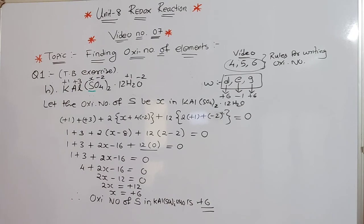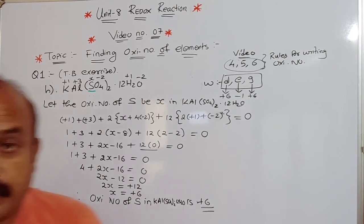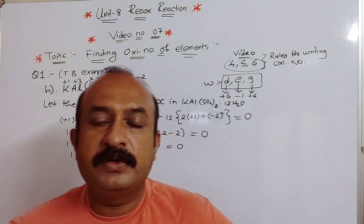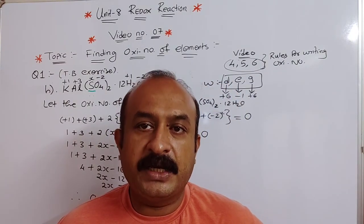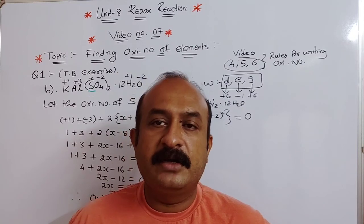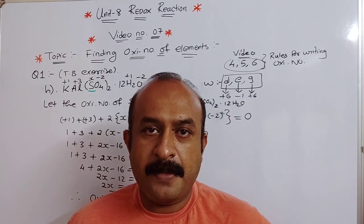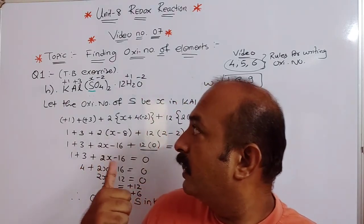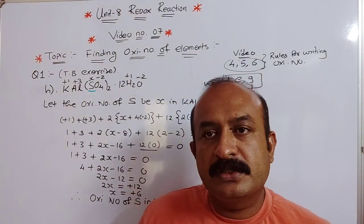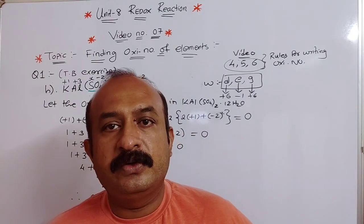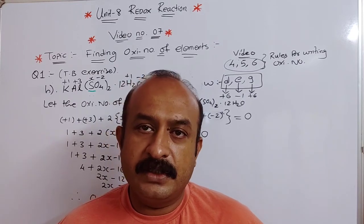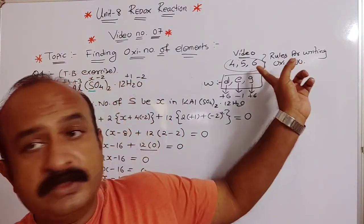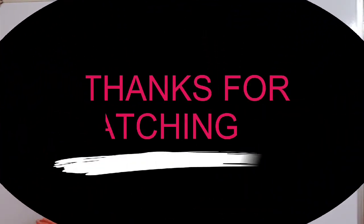Do the homework questions by yourself — that is the way to practice finding the oxidation number of a given or underlined element. Next time we will work on oxidation numbers of polyatomic ions, as there are still many more examples to practice. If you don't get the answer, let me know and I will help you. Thank you very much.